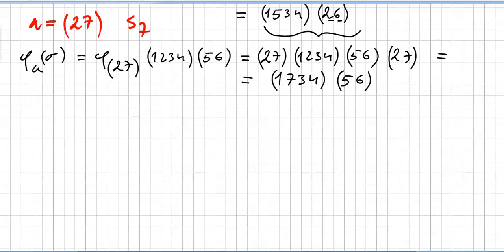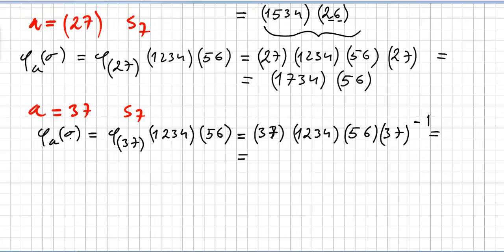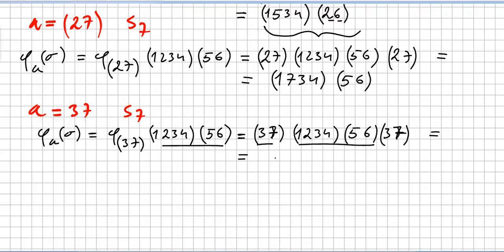Third question: same setup but this time a = (3 7), still in S7. By the same reasoning, the conjugation of sigma by a will be (3 7)(1 2 3 4)(5 6)(3 7), and since the inverse of (3 7) is (3 7) itself, you just write the final result by completing the cycles.